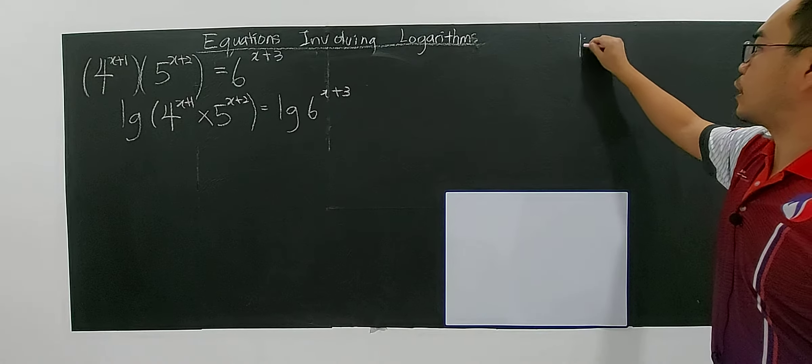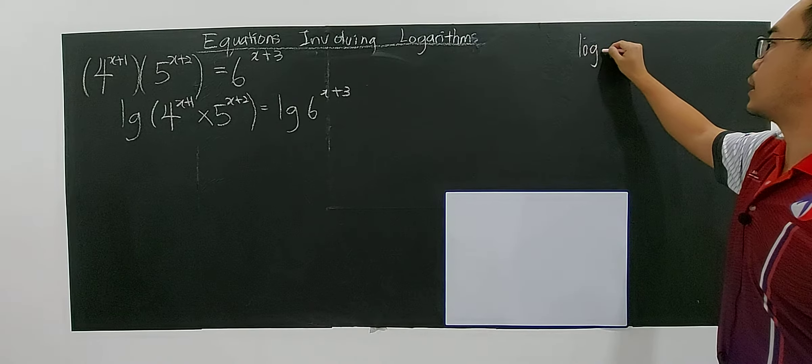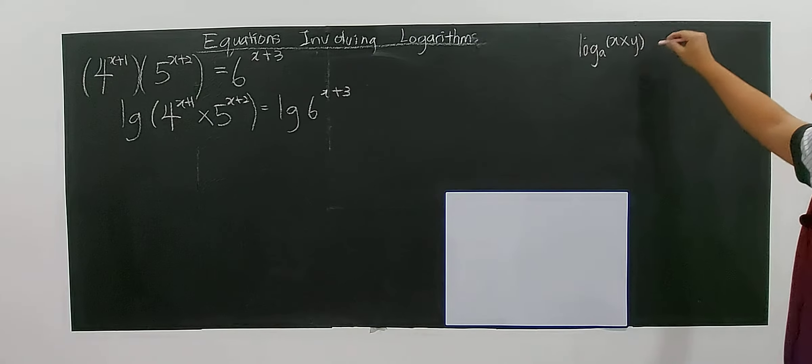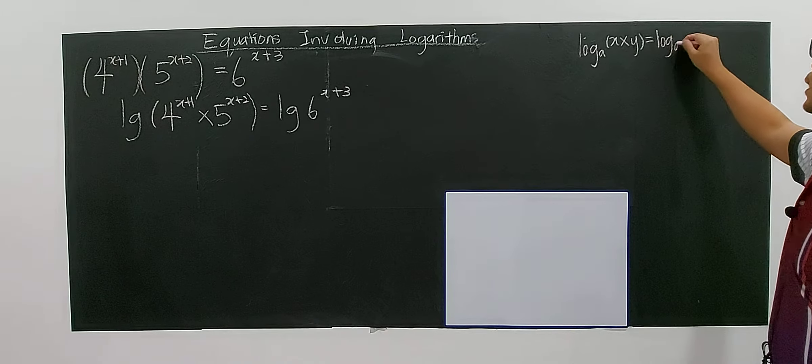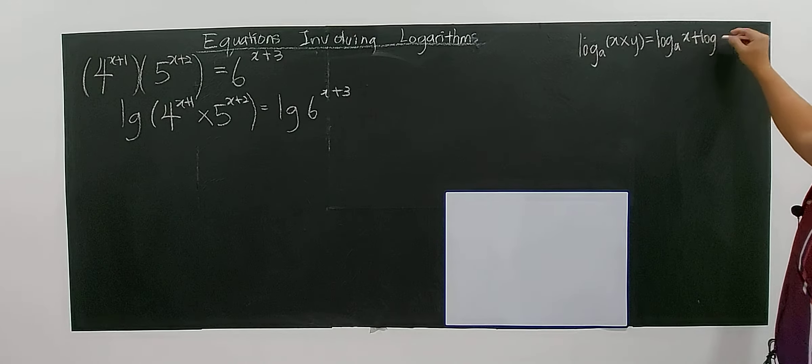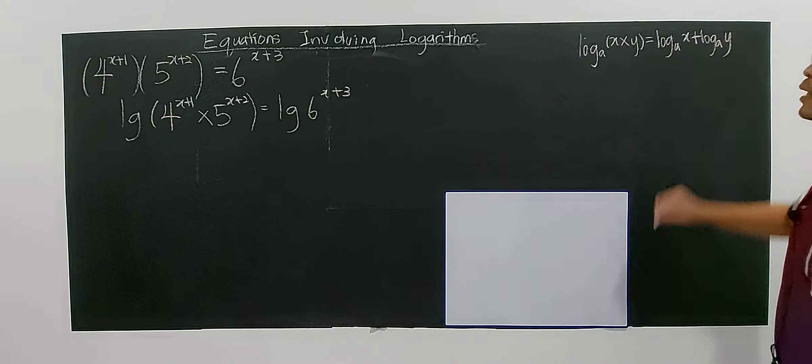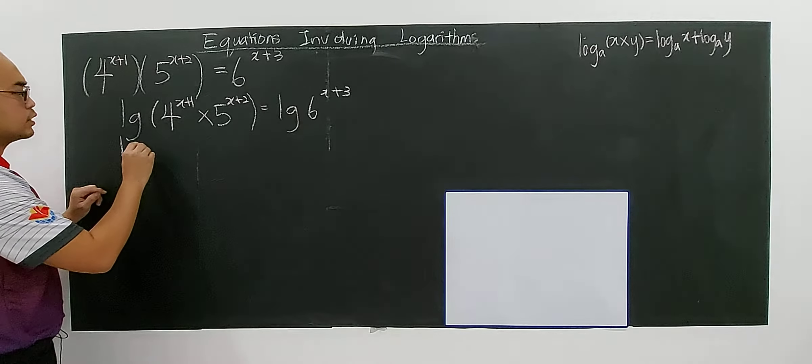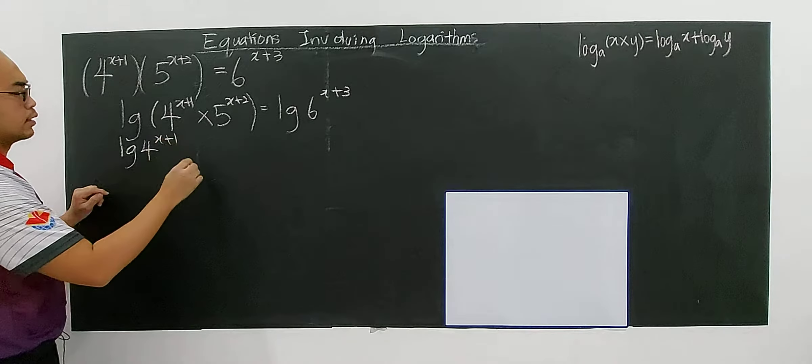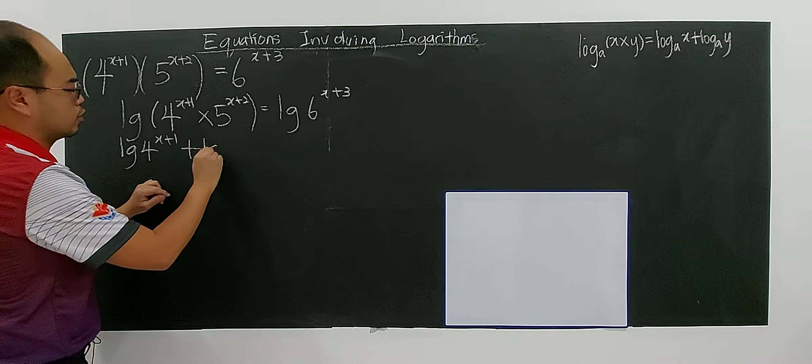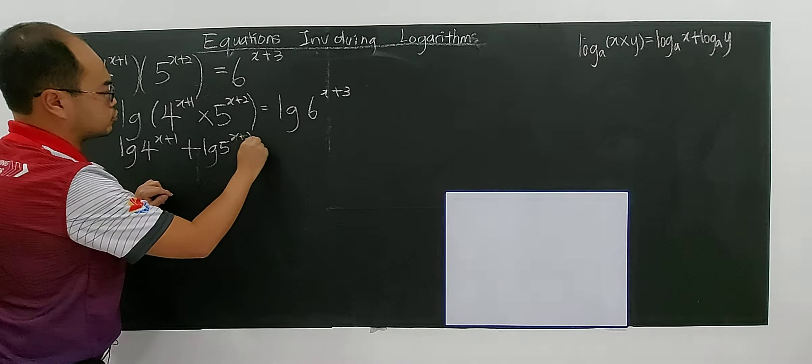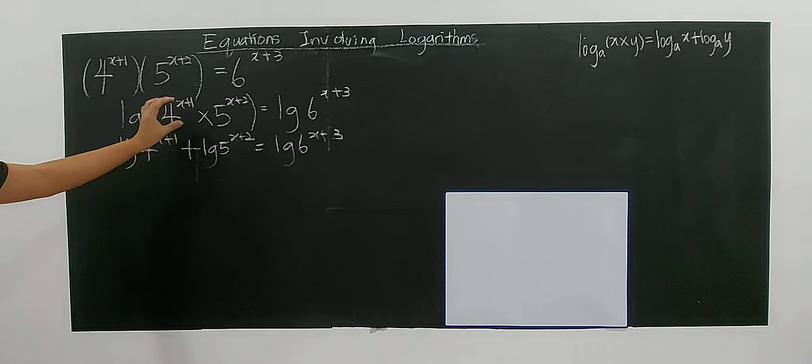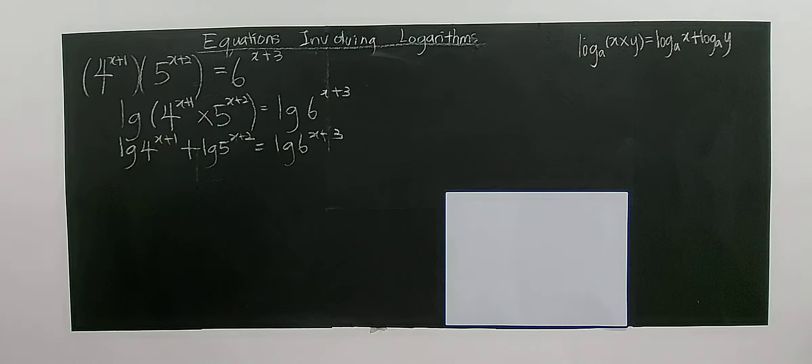You have to remember the formula for log. If you have log base a of (x times y), you can write this as an addition. This is the addition rule for log. So you can convert the product into addition: log(4^(x+1)) + log(5^(x+2)) = log(6^(x+3)). First you log both sides, and when you see multiplication, you convert it to addition.